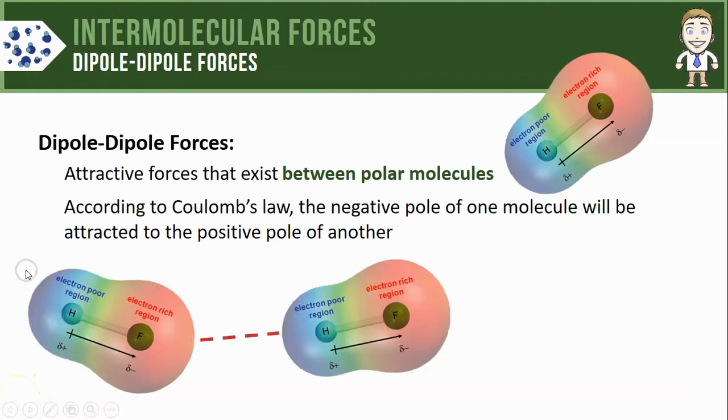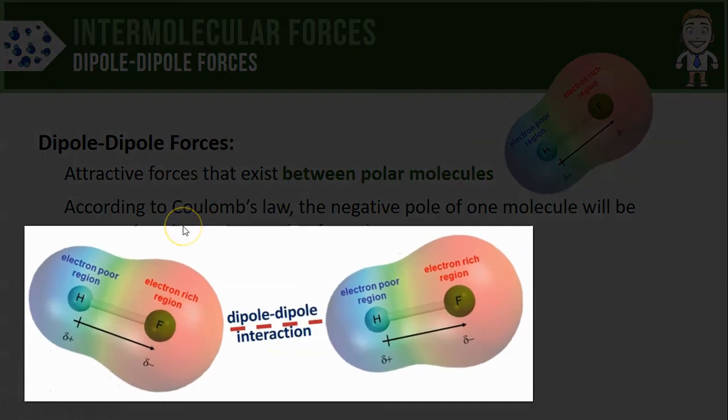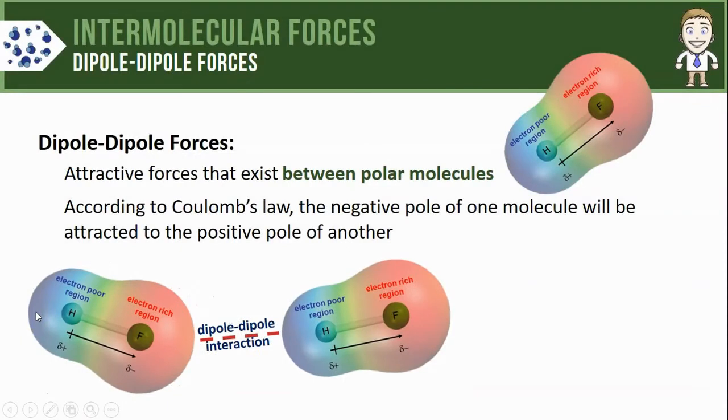Here's what that might look like if we did have two separate hydrogen fluoride molecules. Notice the partially negative fluorine atom is what's being attracted to the partially positive hydrogen in the second molecule. The attraction is typically represented with a dashed or dotted line and that attraction would be called a dipole-dipole interaction since both molecules are polar.